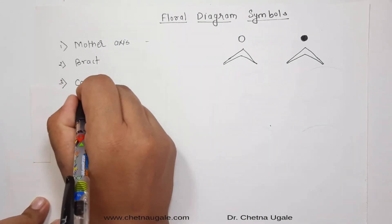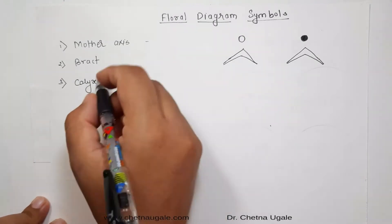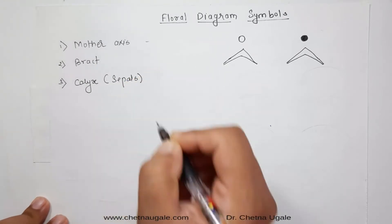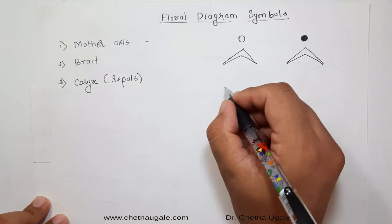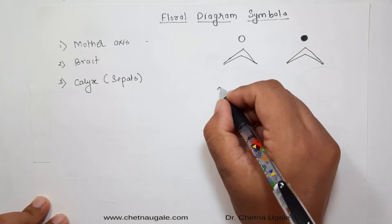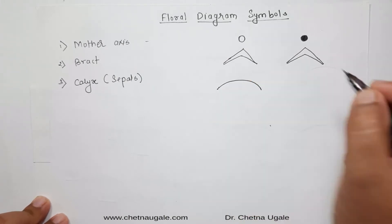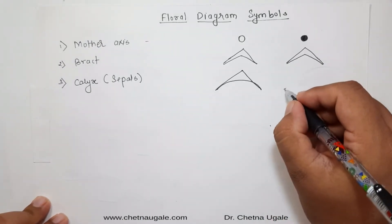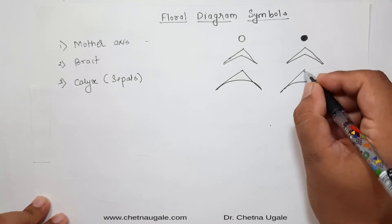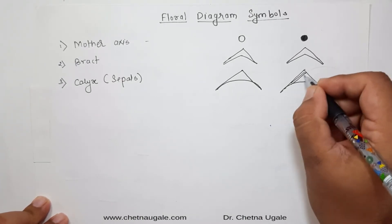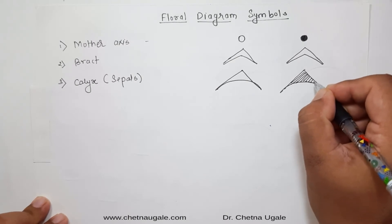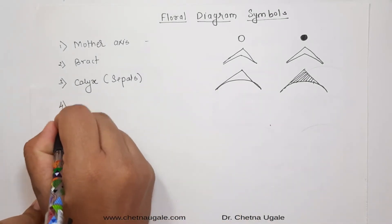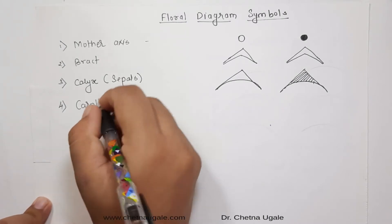Inner to the bract, the next circle is comprised of the calyx. The calyx is the outermost non-essential floral whorl, which is composed of sepals. These individual sepals are represented by a particular symbol — sometimes like a full leaf shape. This is the symbol for the sepal.